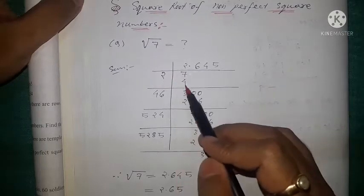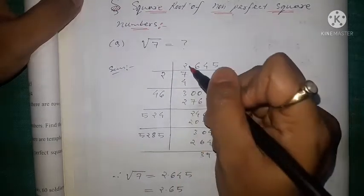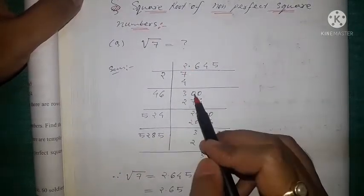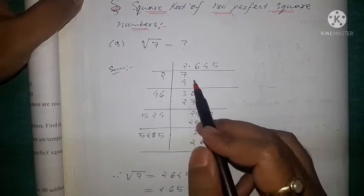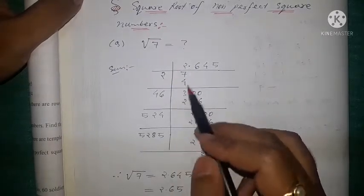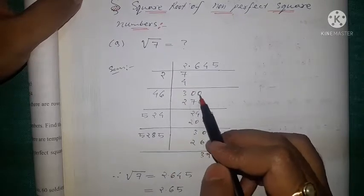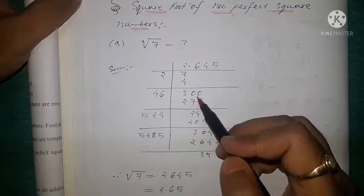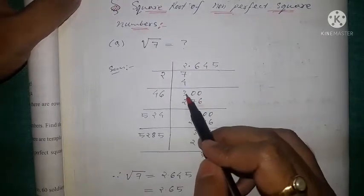First, 2 squared is 4, and 3 comes down, so we put a decimal here. When we put a decimal, we have to put two zeros — in normal division we put one zero, but in this long division method we need two zeros, because all the numbers come down in pairs. So it becomes 300.